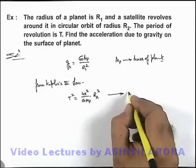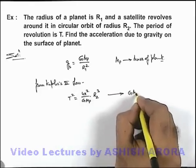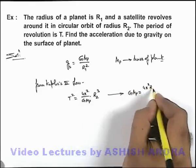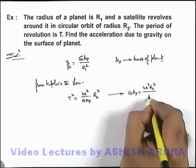And from this relation we can see we are getting GM_p is equal to 4π² R₂ cube divided by T². That would be the answer of this problem.